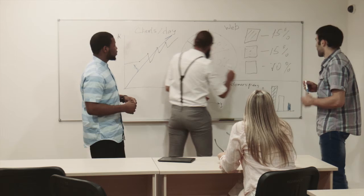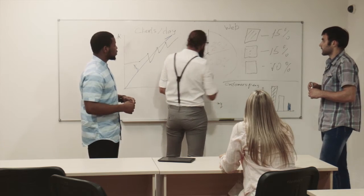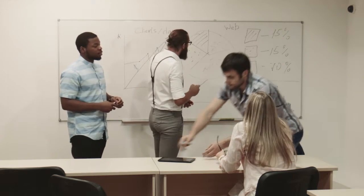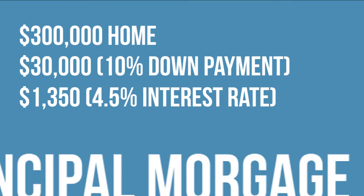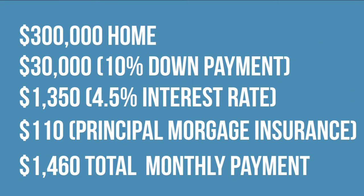But let me explain to you what a half percent does to your buying power. Again, our scenario on a $300,000 home with a 10% down payment at 4.5% is $1,460 monthly payment.